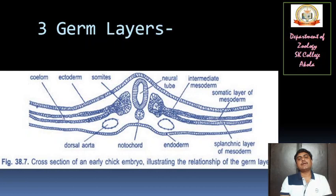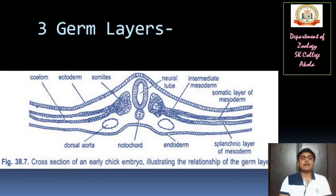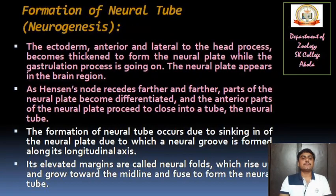Now we will see how the three germ layers get formed. With the help of this diagram you are able to see a cross-section of the early chick embryo illustrating the relationship of the germ layers — how ectoderm, mesoderm, and endoderm get formed. You are able to see the ectodermal layer, the somites, the neural tube, the intermediate mesoderm, the somatic layer of mesoderm forming, the endoderm at the lower surface, and the notochord and dorsal aorta now starting their development.